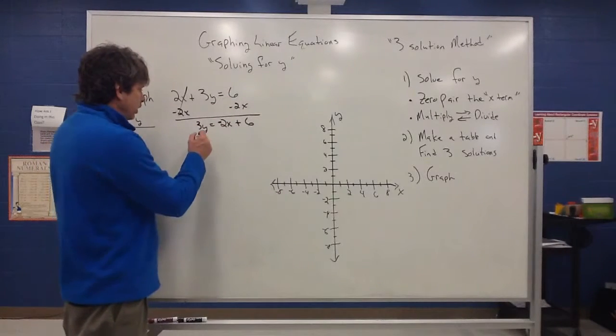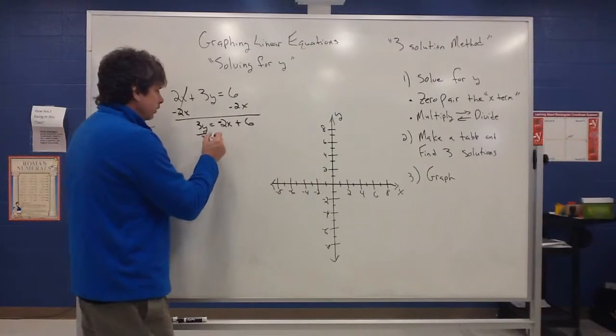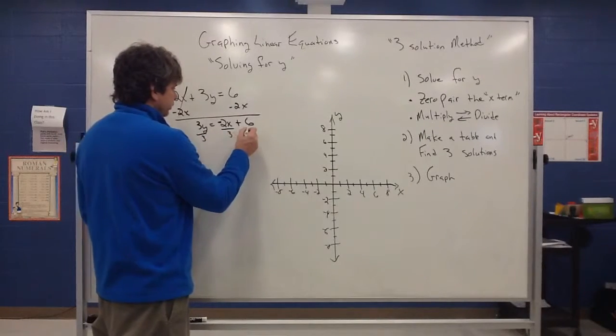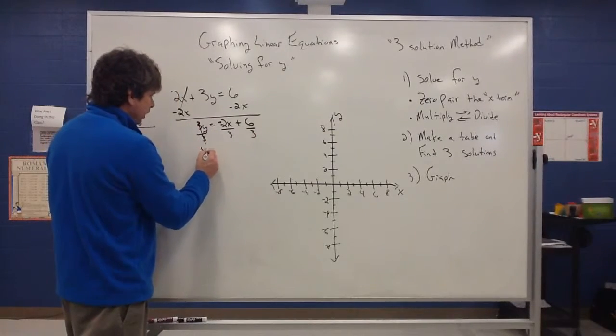Now to get y by itself, we need to get rid of this multiplication by using division. And what I'm going to do over here is divide each side also by a 3. So that has to happen. So these 3s divide out. My y gets by itself.